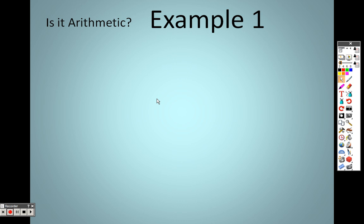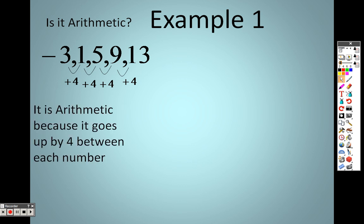In example 1 here, is it arithmetic? Well, the reason we can tell if it's arithmetic is if it's going up by the same number every single time. Well, from negative 3 to 1, it's going up by 4. From 1 to 5, it's going up by 4. From 5 to 9, going up by 4. 9 to 13, going up by 4. So, if it's going up by 4 every single time, that means it is arithmetic because it goes up by the same number every single time.